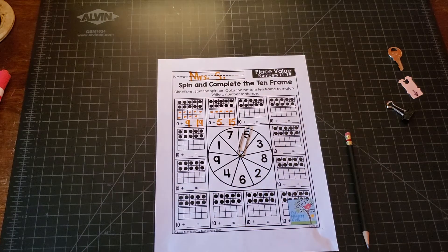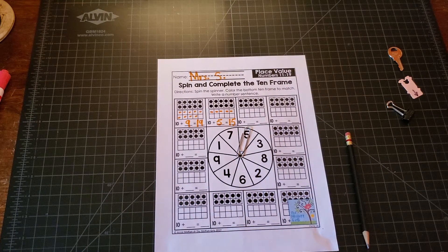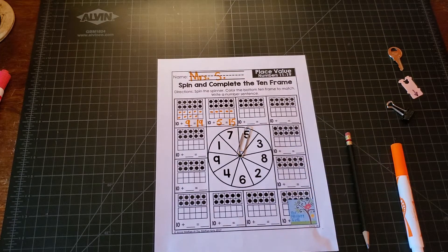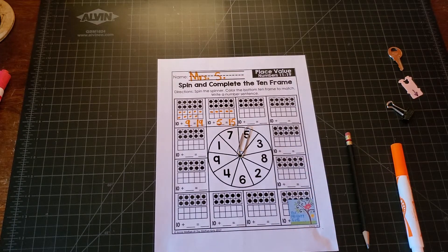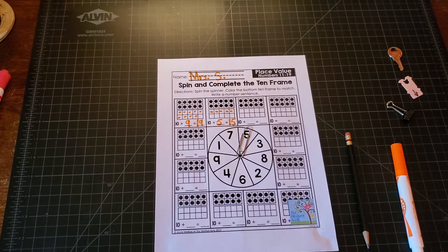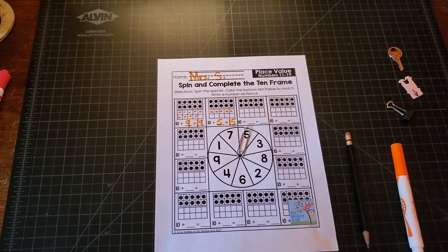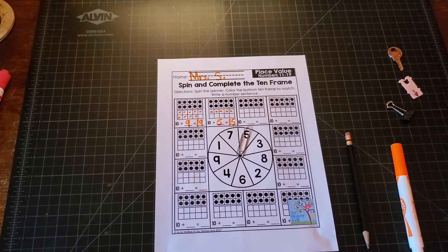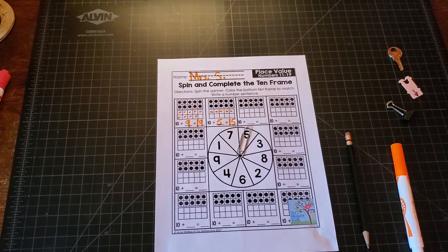And then you can keep going. The people who made the paper, the Moffat Girls, added some extras in case you spin the same number more than once. That's fine. You do not have to make sure you get each one. That's not a must. Just spin, play and have fun and that's a good way to practice composing your teens.